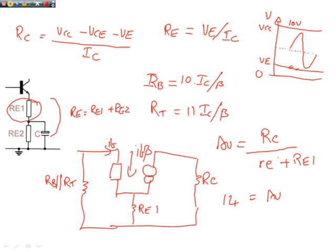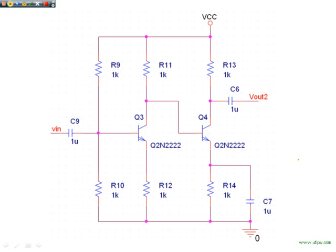AV of this circuit is approximately equal to RC divided by RE plus RE1. So if you want this to equal 14 and you've already got some calculations for RC, you can calculate RE. RE equals VT over IE and you can solve for RE1. So there we go. You can perform this first design.